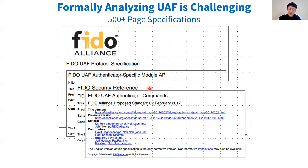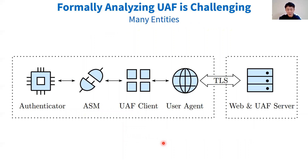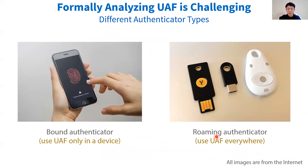However, formally analyzing UAF is challenging for several reasons. First, the descriptions of UAF are scattered over 500 pages of specifications across 19 documents. Many security assumptions and security goals of UAF are implicit and ambiguous. It takes a lot of time to digest the specifications and extract the security assumptions and goals. Second, the protocol is complicated because there are many entities and many channels, every one of which can be compromised in real-world settings. Third, the UAF protocol has many optional steps and more complicated cases — for example, there are four types of authenticator protocols, which lead to four versions of slightly different protocols.